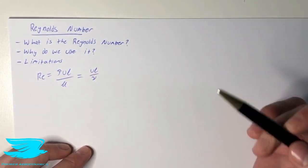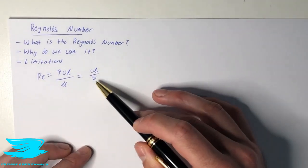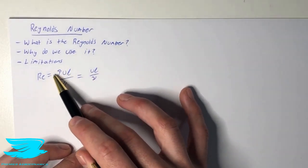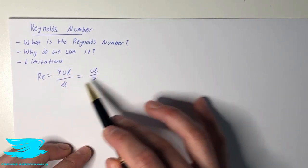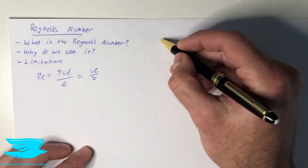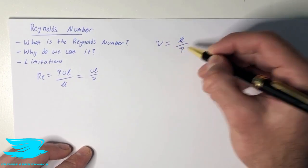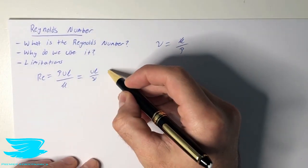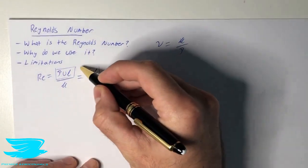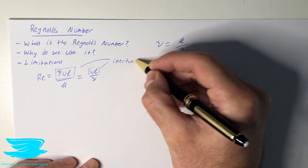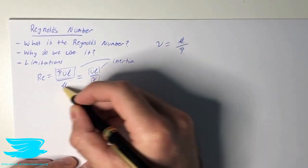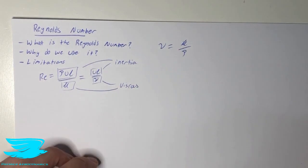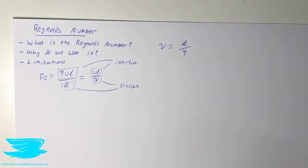This is also equal to the velocity, u, times by the length scale, L, divided by the kinematic viscosity, nu. You'll notice that these two equations are very similar — the only difference is there's another term on top and the term on the bottom is a little bit different. Just know that these two terms are actually equivalent: nu equals mu on rho. The top terms, regardless of which form you have, both indicate the inertial forces. The bottom terms, regardless of which form you have, dictate the viscous forces. So this equation is literally just a balance between the inertial forces and the viscous forces.